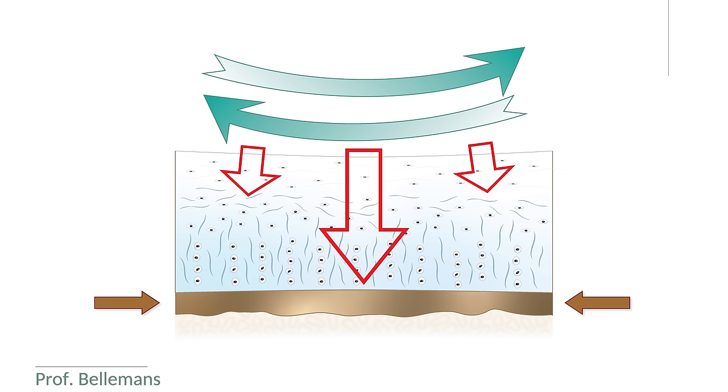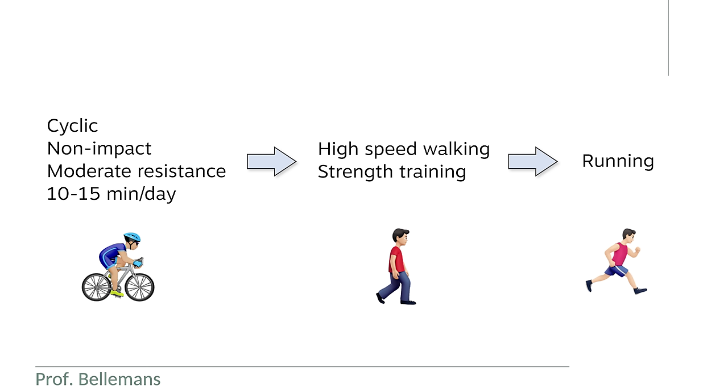But you have to go very, very slowly. First improve the quality of your cartilage layer with the exercises I've explained: cyclic, non-impact, moderate resistance, 10 to 15 minutes per day. Then gradually proceed to soft impact loading, like high-speed walking or soft jogging, combined with strength training, and then proceed very gradually to real running. And take your time. This is a very slow process because these tissues take time to adjust and become stronger.